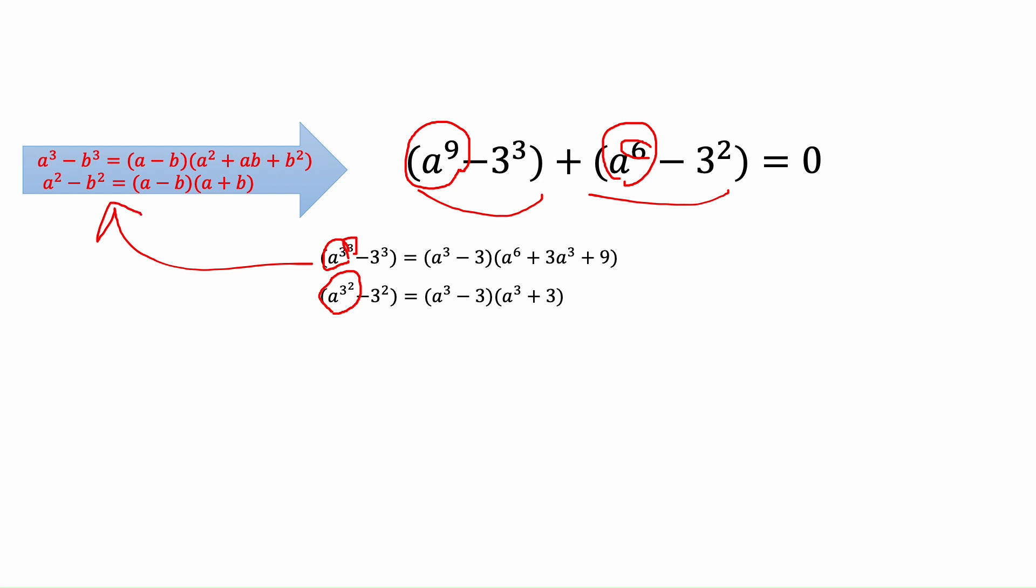So now we can write them as 2 multiplication. As we can see, 3 to the power 3 is our b cubed, so b is 3. And here, 3 to the power 2 is our b squared, which is b equals to 3. So same as here.